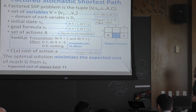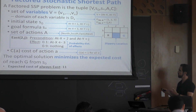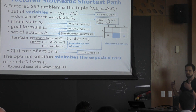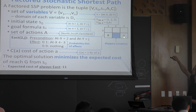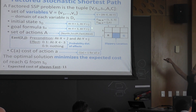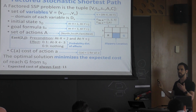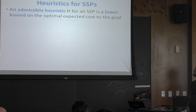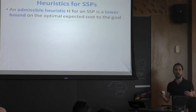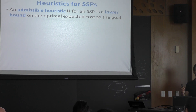What we want to find is the optimal solution — a solution to minimize the expected cost to reach the goal from the initial state. For example, if we always apply east, the robot tries to go step by step, and the expected cost of that solution is 11: one unit of cost to get to the slippery cell, then since it fails with probability 0.9 and succeeds with probability 0.1, in expectation we execute that action 10 times. A heuristic for these problems is a lower bound on that optimal solution — any function giving a lower bound is an admissible heuristic.